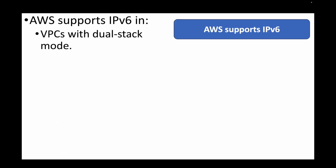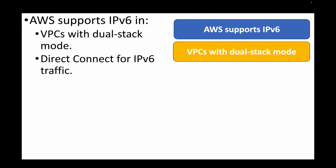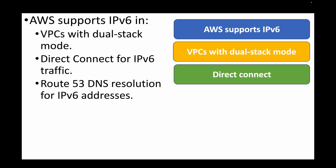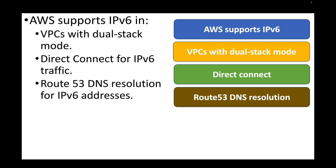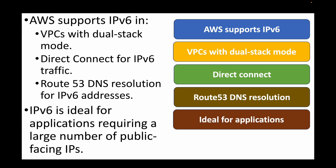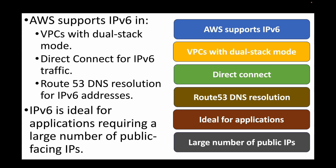The final question is: how does AWS support IPv6 in networking? AWS VPC supports both IPv4 and IPv6. You can use VPCs in dual-stack mode, use Direct Connect for IPv6, and use Route 53 DNS resolution for IPv6 addresses. IPv6 is ideal for applications that require a large number of public-facing IPs or large-scale public addressing.